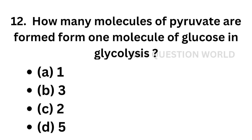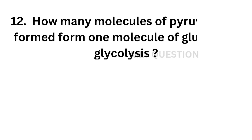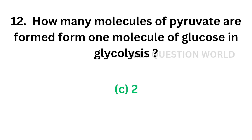Question number 12. How many molecules of pyruvate are formed from one molecule of glucose in glycolysis? Option A, 1; option B, 3; option C, 2; option D, 5. The correct answer is option C, 2. Two molecules of pyruvate are formed from one molecule of glucose in glycolysis.